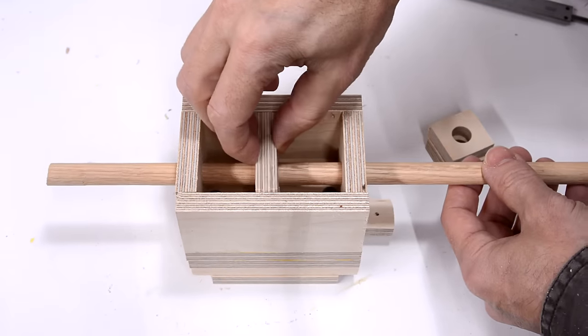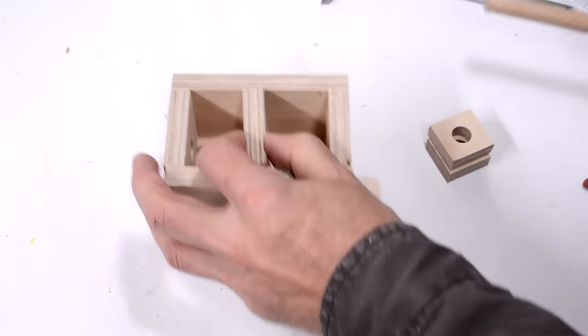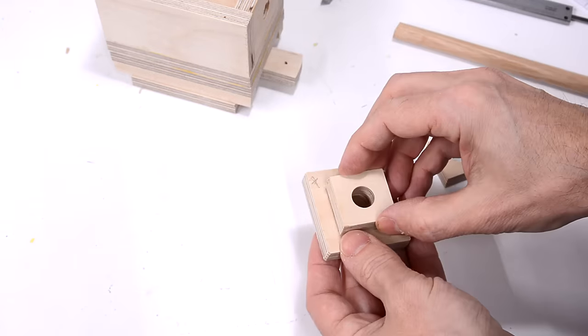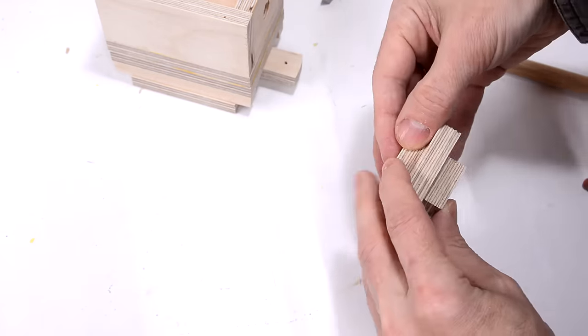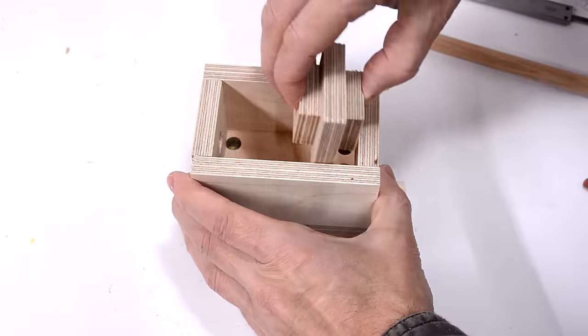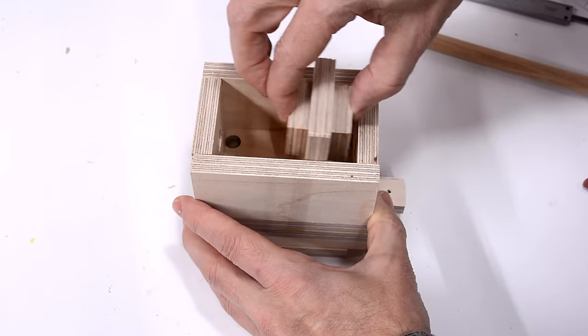Now this piston is a little bit loose on the dowel so to get a bit more support for it, I made these two pieces to go on either side of it. And that's okay because the piston doesn't actually travel all the way to the end of the cylinder.